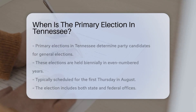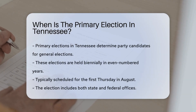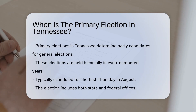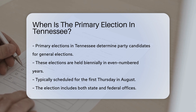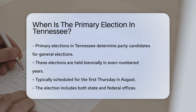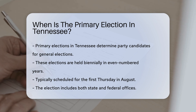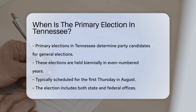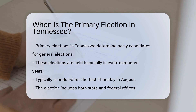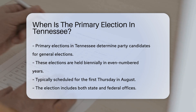Primary elections are crucial in determining party candidates for the general elections. In Tennessee, these elections are held biennially — they occur in even-numbered years. The specific date for primary elections can vary, but it is typically scheduled for the first Thursday in August, consistent with Tennessee's election laws.